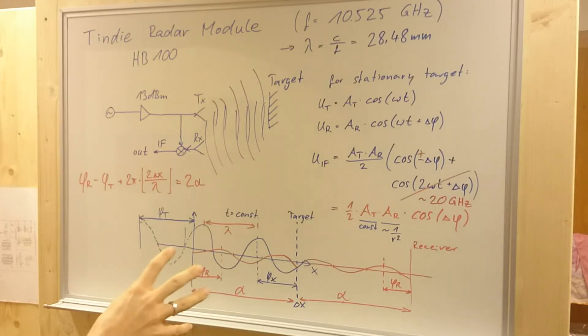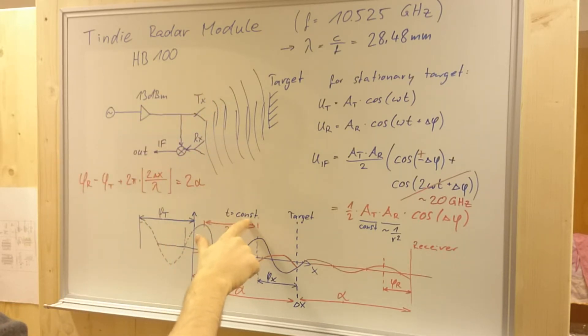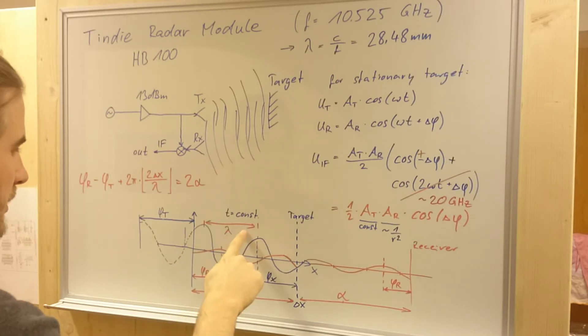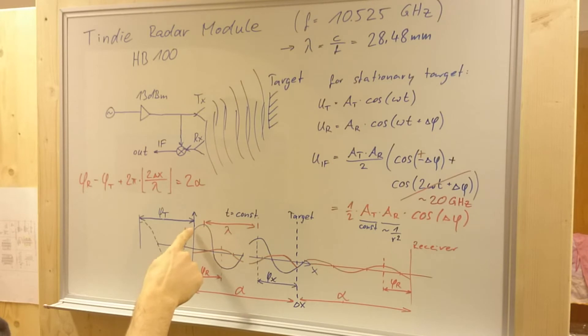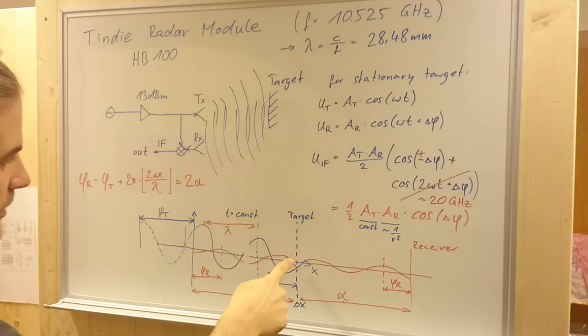When we look at this situation at one time, so the time is constant, the field strength over the distance looks like this. So, we have some more waveforms in between, but for simplicity, this doesn't matter. You can extend this if you want to by a multiple of the wavelength. We start here with our cosine, with a transmitting phase, then it gets to the target, and it comes back to the receiver, and we have here a receiving phase.